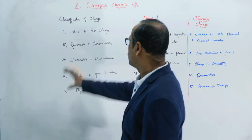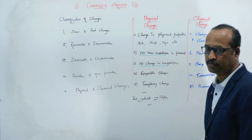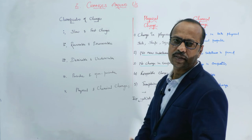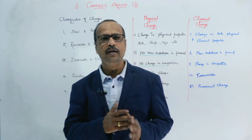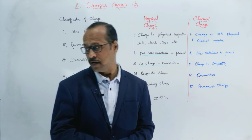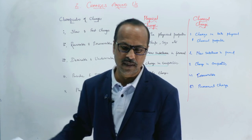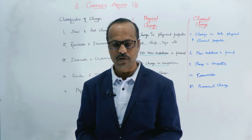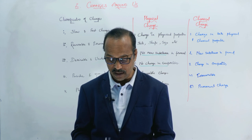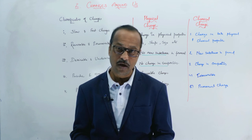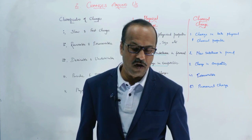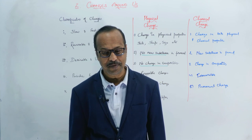So these are the changes around us — five types of changes discussed. You already know all of this; we have just studied it in a systematic way. Practice the question sets — they are very simple, no numericals. In the next class, we are going to start the third chapter: Atomic Structure, a very very important chapter. Till then, bye — take care of yourself and keep studying.